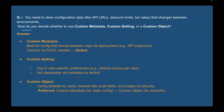You need to store configuration data like API URLs, discount limits, and tax rates that change between environments. Use Custom Metadata when config needs to move between orgs via deployment — it's ideal for API endpoints and is queryable and fast. Use Custom Setting for org-specific preferences like default country per user, though it's not deployable by default. Use Custom Object when data is configured by users, needs audit trail, and is dynamic — prefer Custom Metadata for static config.